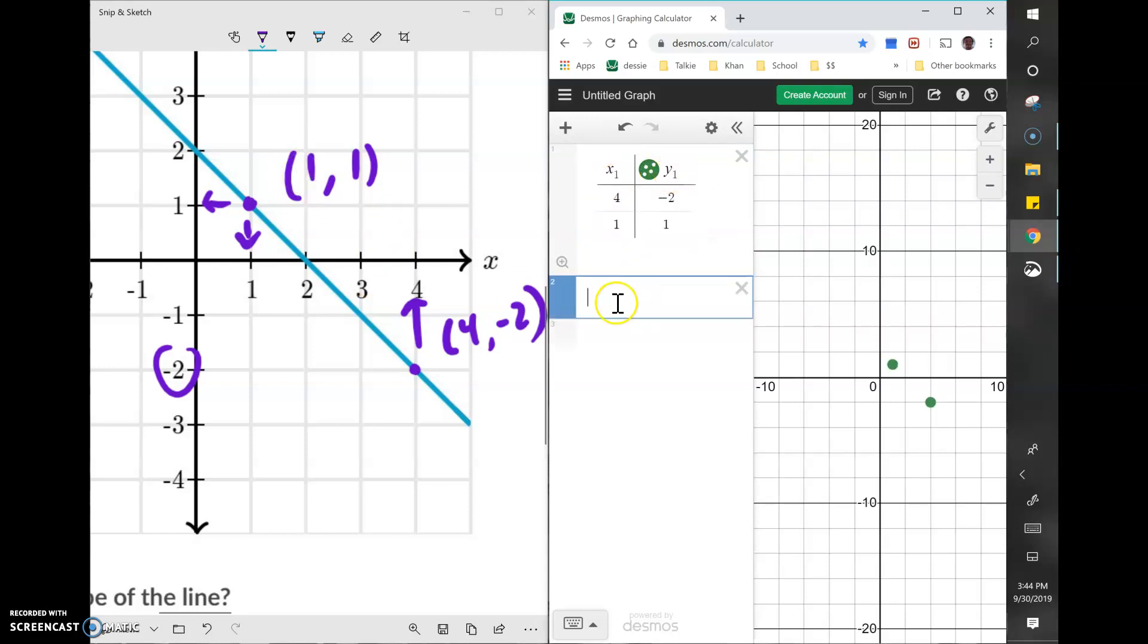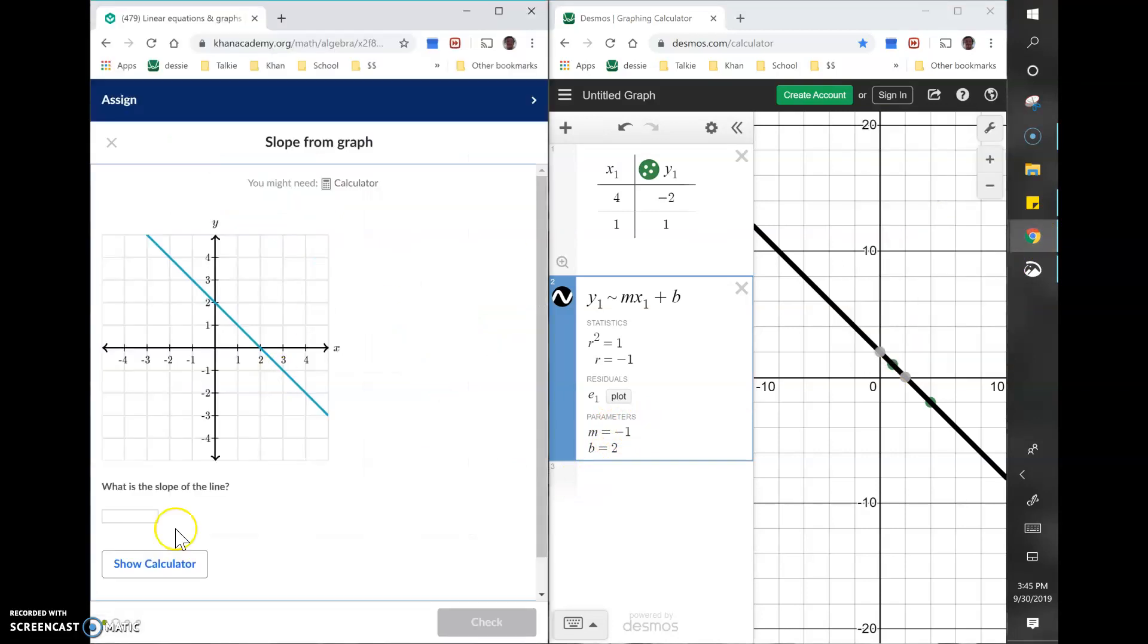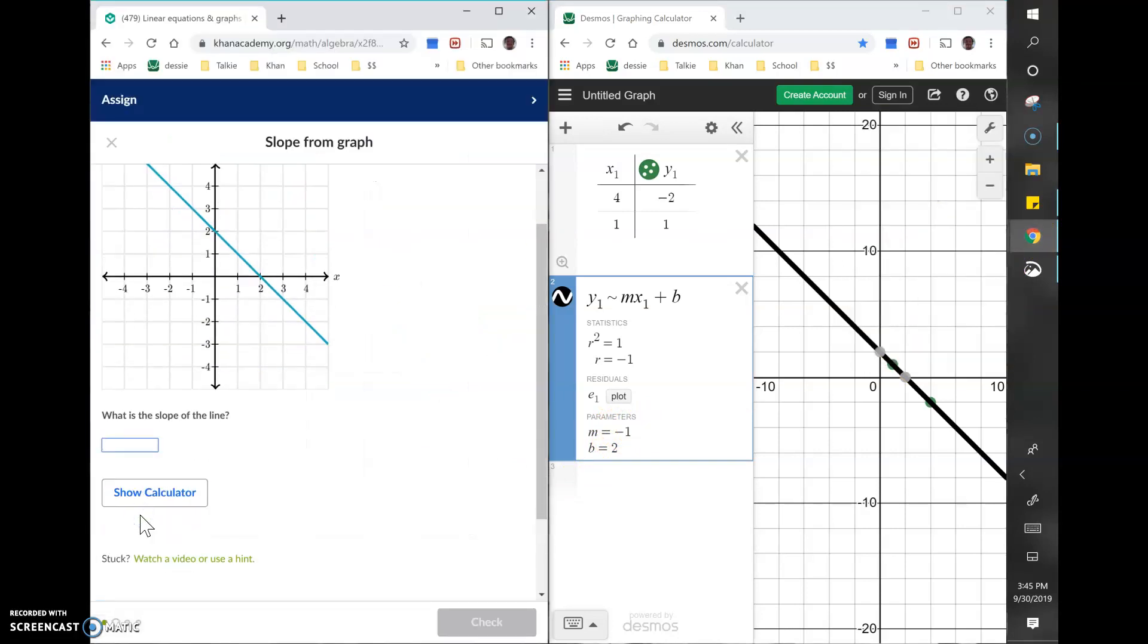And then I'm going to link this table to the linear regression equation, so y1 shift, the key next to the one on the keyboard is the squiggly, mx1 plus b. And this black line is the same as this blue line, and the reason why I know that is because the coordinate points come from this blue line. And I'm just looking down here, the slope is negative 1. And I'm going over to Khan and I'm typing in negative 1.